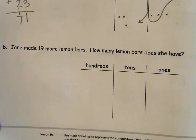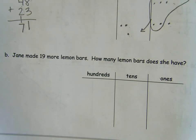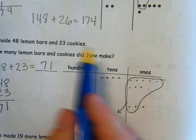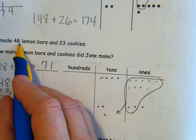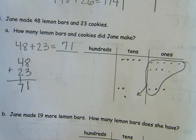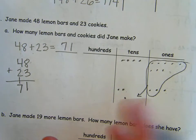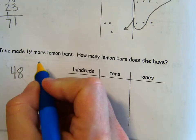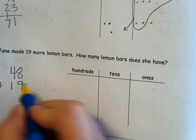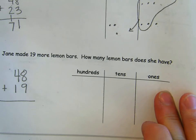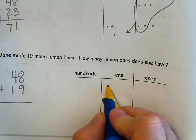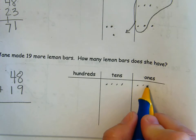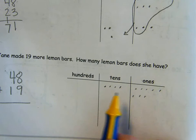Now the second part, Jane made 19 more lemon bars. How many lemon bars does she have now? I'm going to have to go back up and see. How many lemon bars did she have? She had 48 lemon bars and now she's made 19 more. How many does she have? She's made more of them. We have to add that together. So 48 plus 19. Let's make sure we line it up correctly and represent it over here. So again, there's no hundreds. Here are my tens. 10, 20, 30, 40, four tens, 41, 42, 43, 44, 45, 46, 47, 48. Four tens, eight ones.